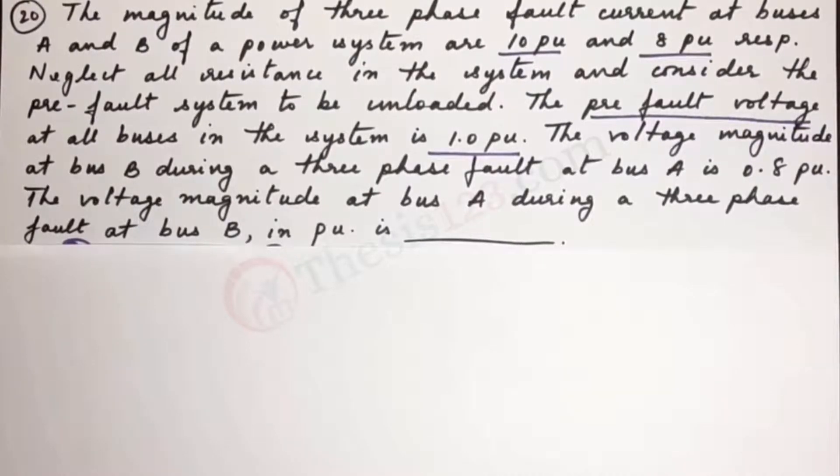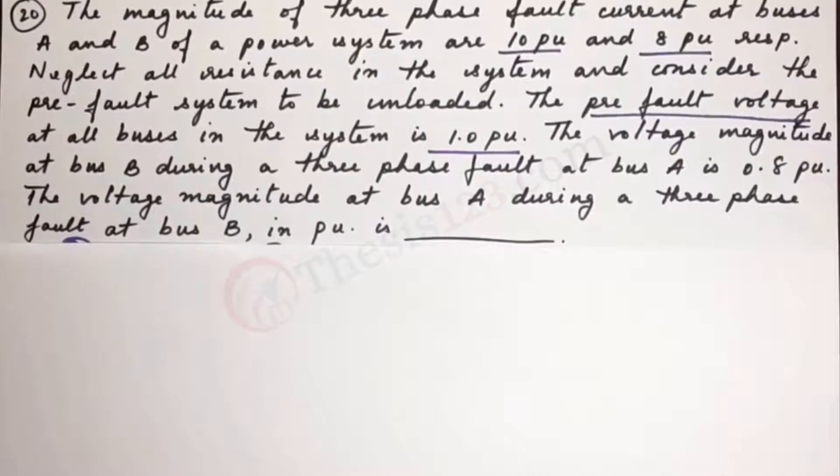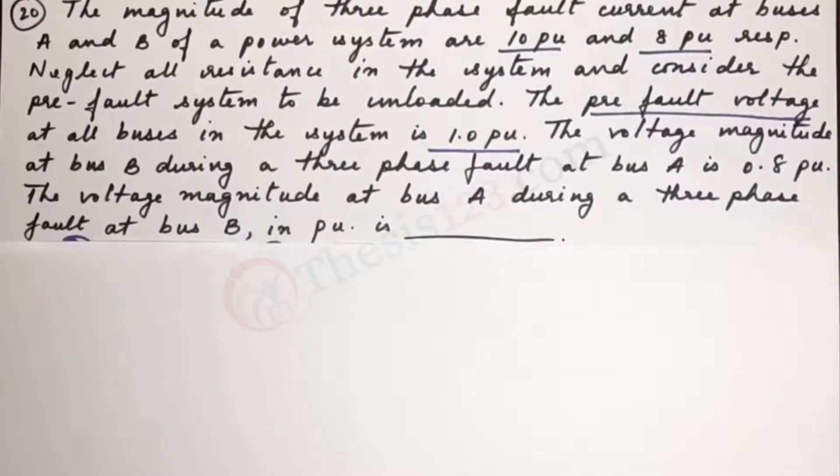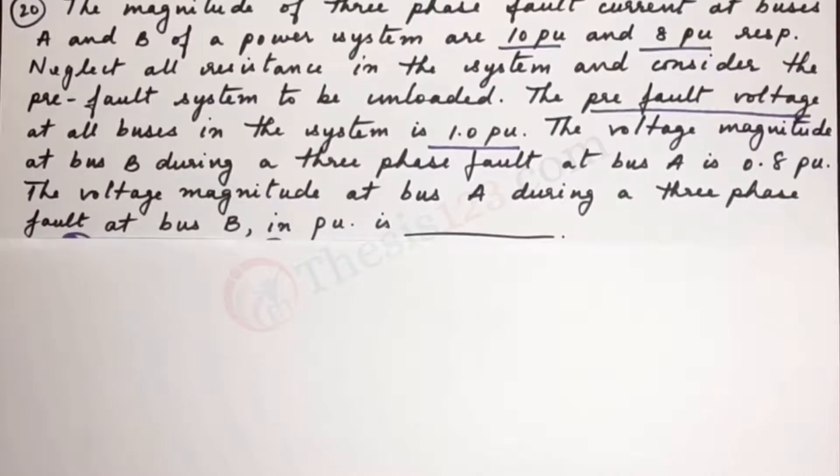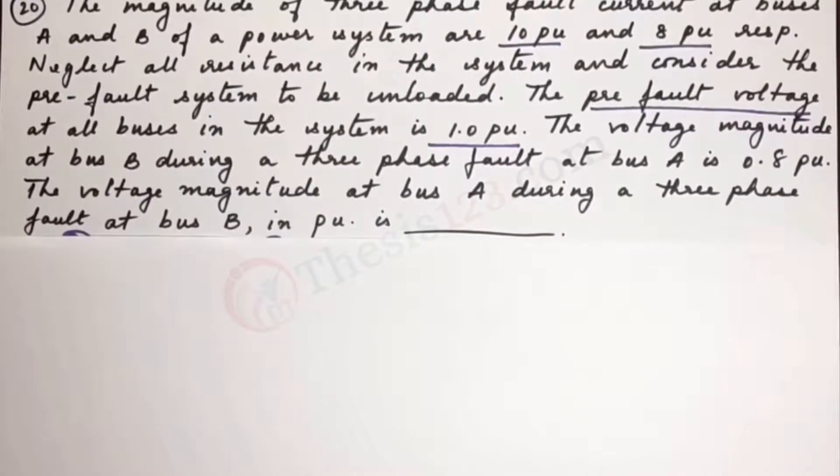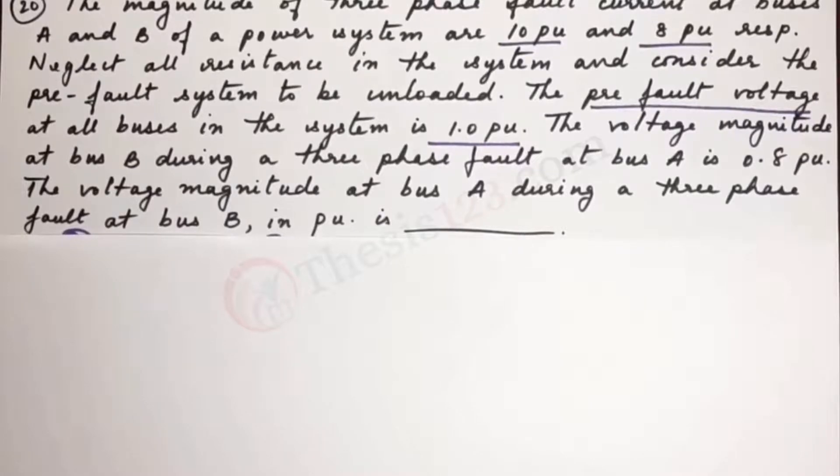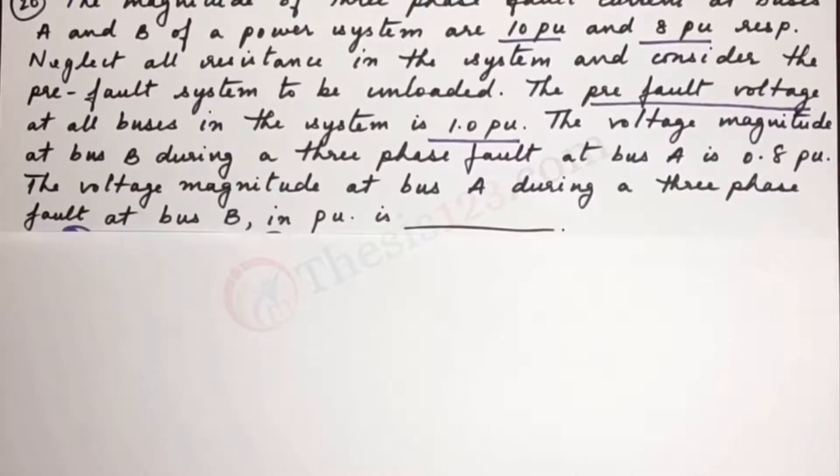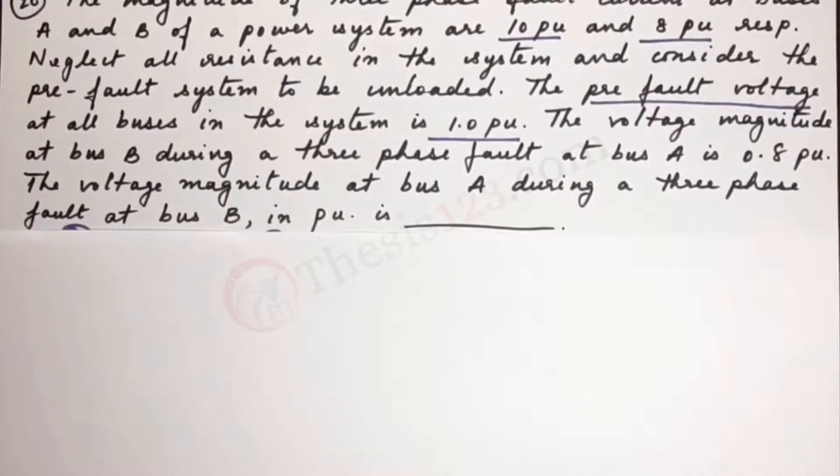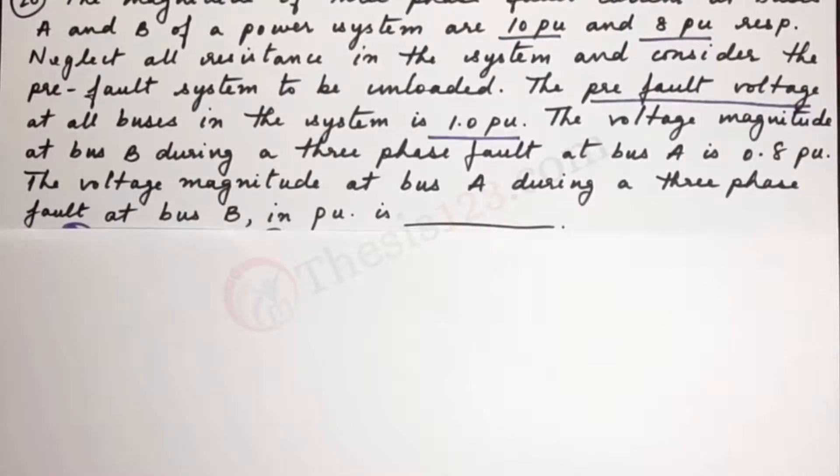Neglect all resistance in the system and consider the pre-fault system to be unloaded. The pre-fault voltage at all buses in the system is 1.0 PU. The voltage magnitude at bus B during a three-phase fault at bus A is 0.8, and the voltage magnitude at bus A during a three-phase fault at bus B is dash.